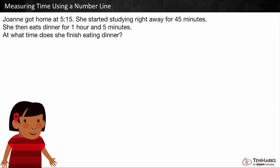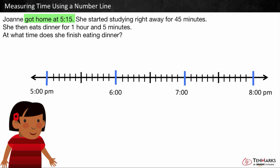We want to find out what time Joanne finished eating dinner. Let's start by finding where 5:15 is on the number line. Here's the 5 o'clock mark. And because each tick mark represents 5 minutes, we can skip count by 5 to find 5:15. 5:05, 5:10, 5:15.